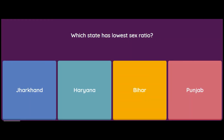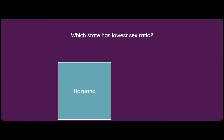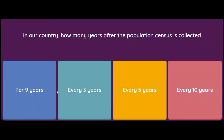Which state has the lowest sex ratio? Options are Jharkhand, Haryana, Bihar, or Punjab. The answer is Haryana. Sex ratio refers to the number of females per 1,000 males. Haryana has the lowest sex ratio in our country.